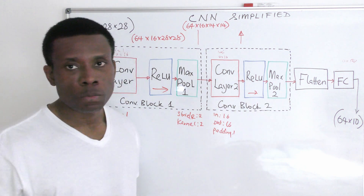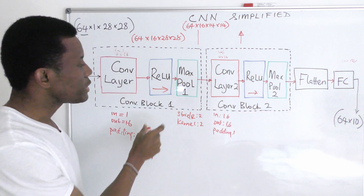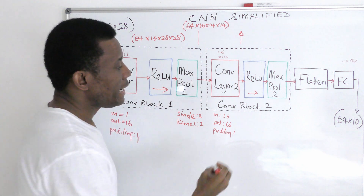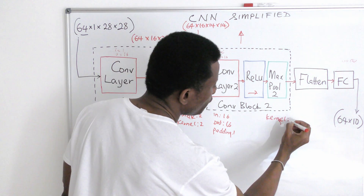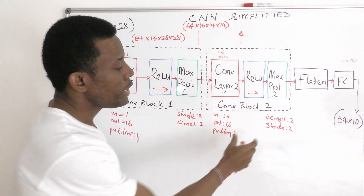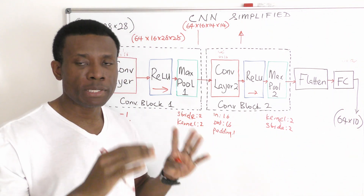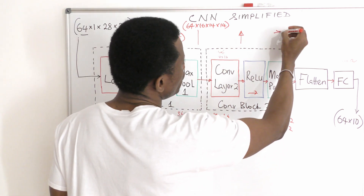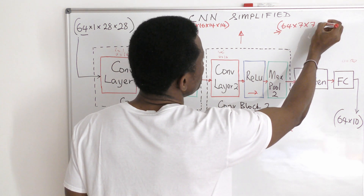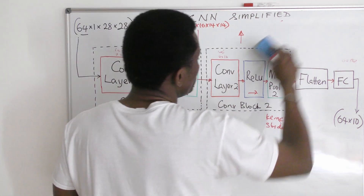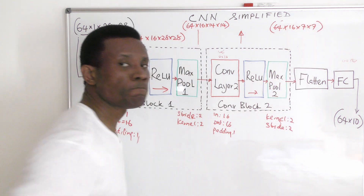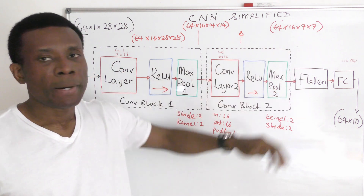Max pooling layer 2 performs similar actions as max pooling layer 1. It takes the input dimension and cuts it by half. We have a kernel of 2 and a stride of 2, which cuts the spatial dimension by half. So the max pooling layer is going to produce an output of 64 by 16 by 7 by 7.